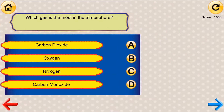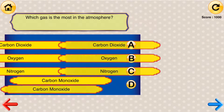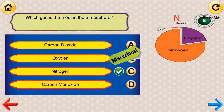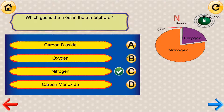Which gas is the most abundant in the atmosphere? Carbon dioxide, oxygen, nitrogen, or carbon monoxide? The answer is nitrogen.